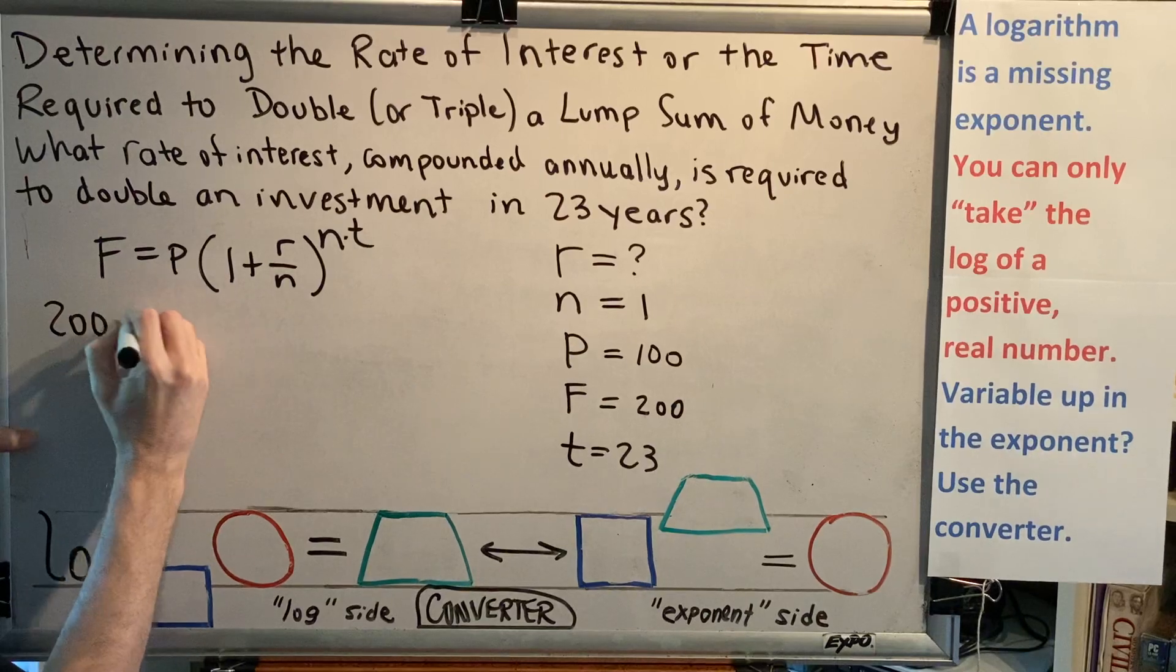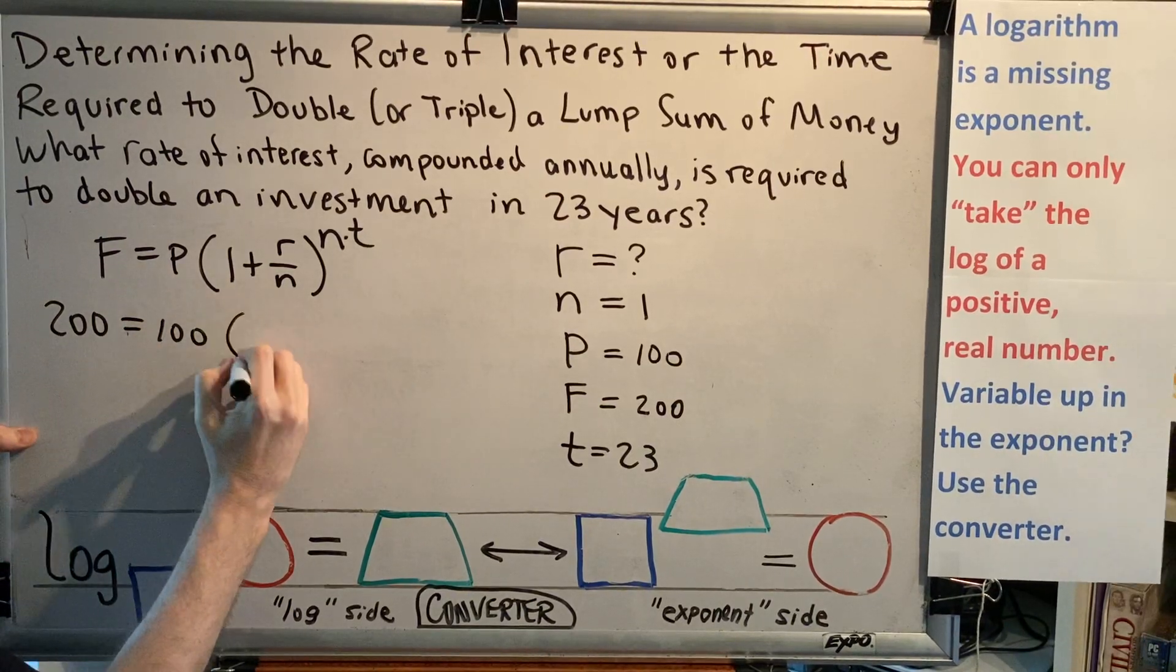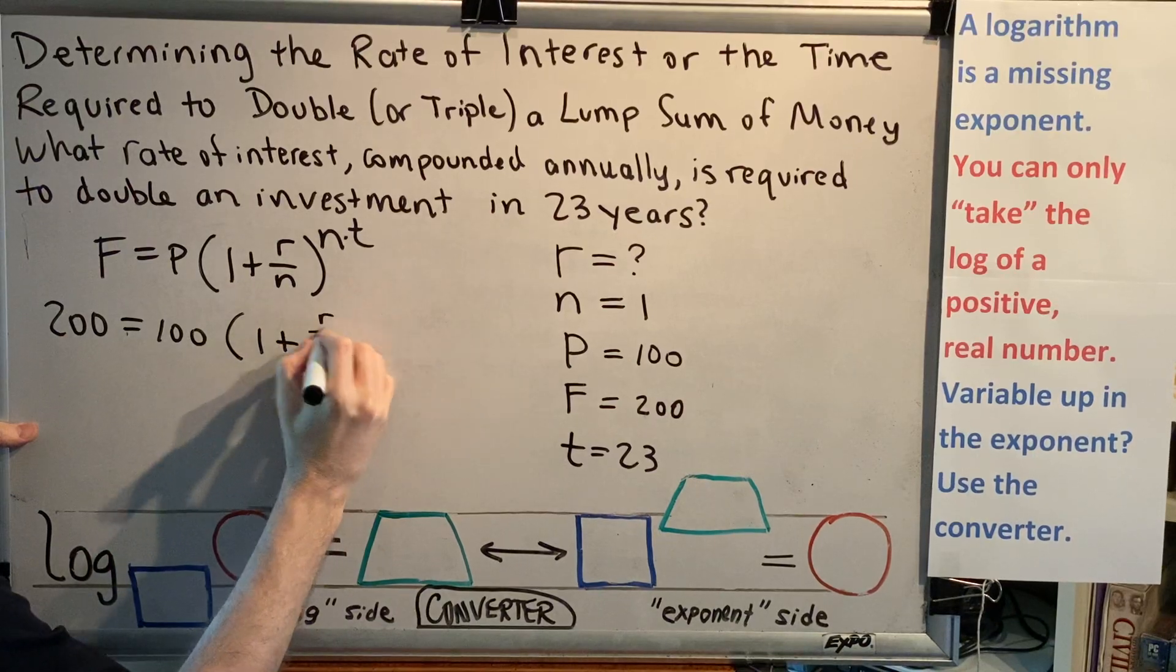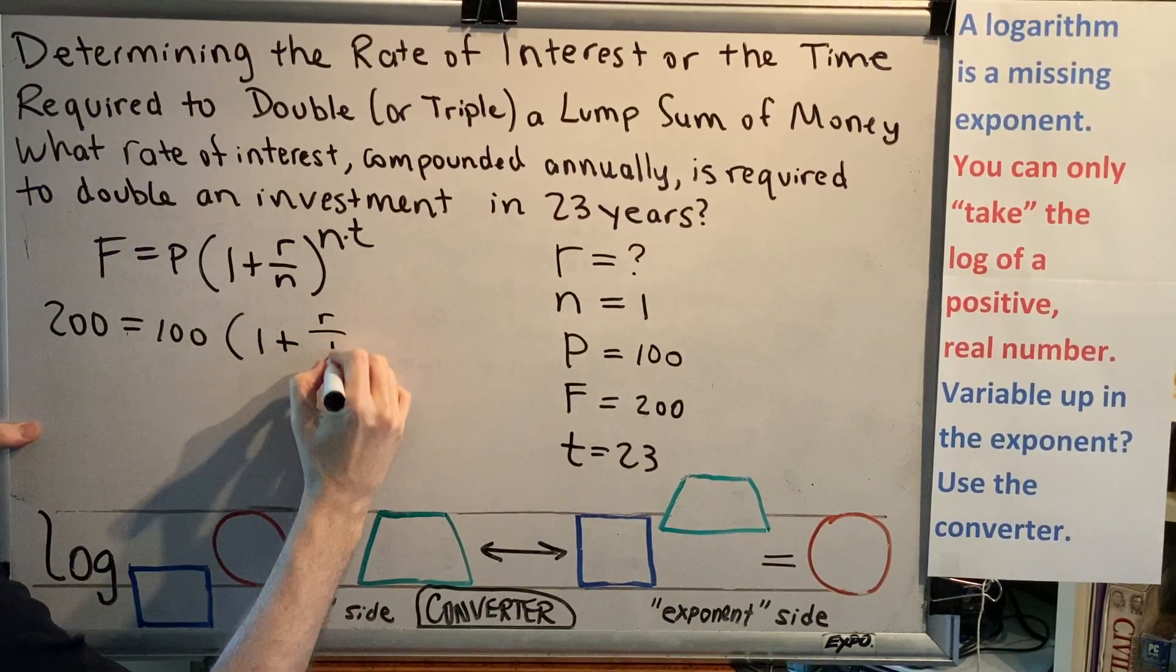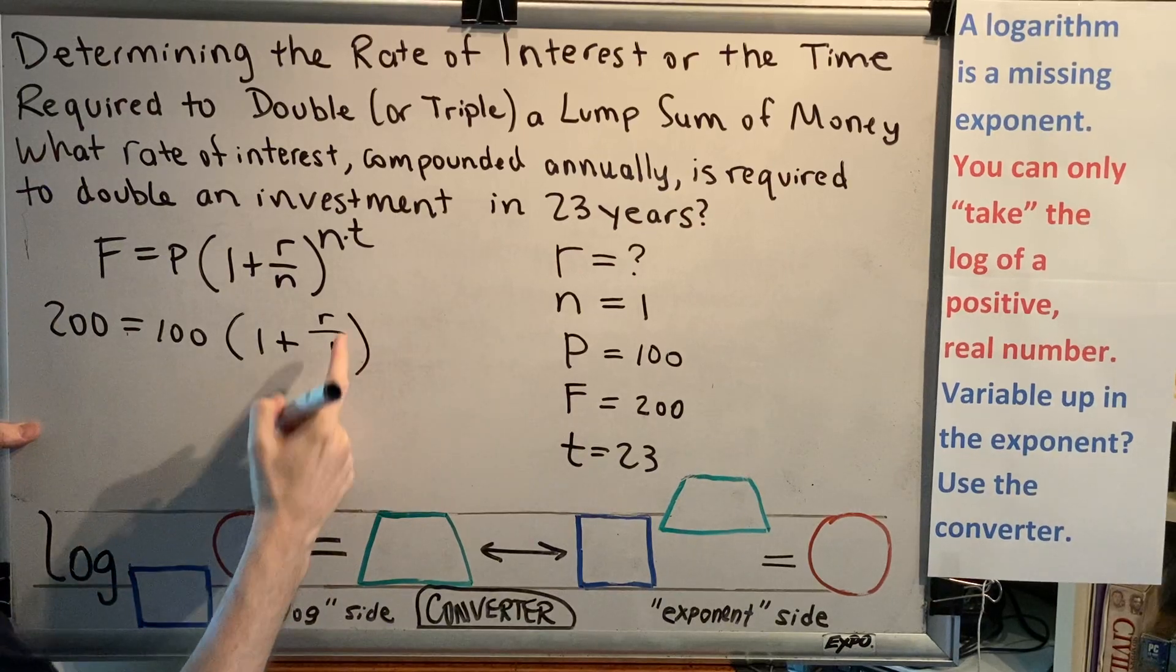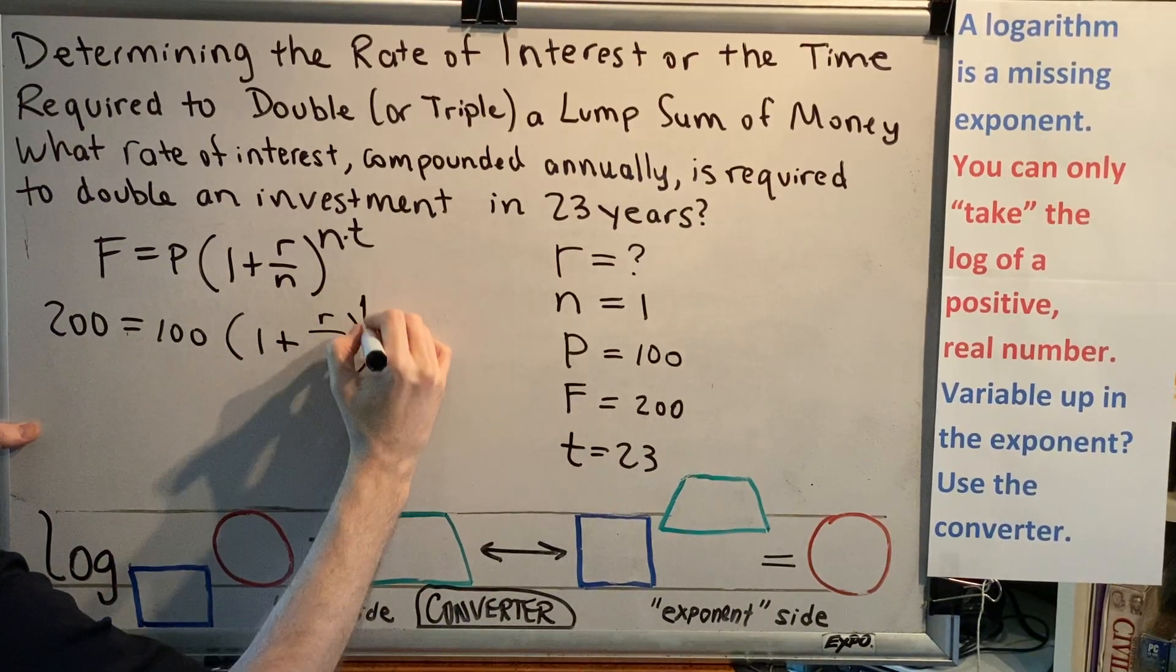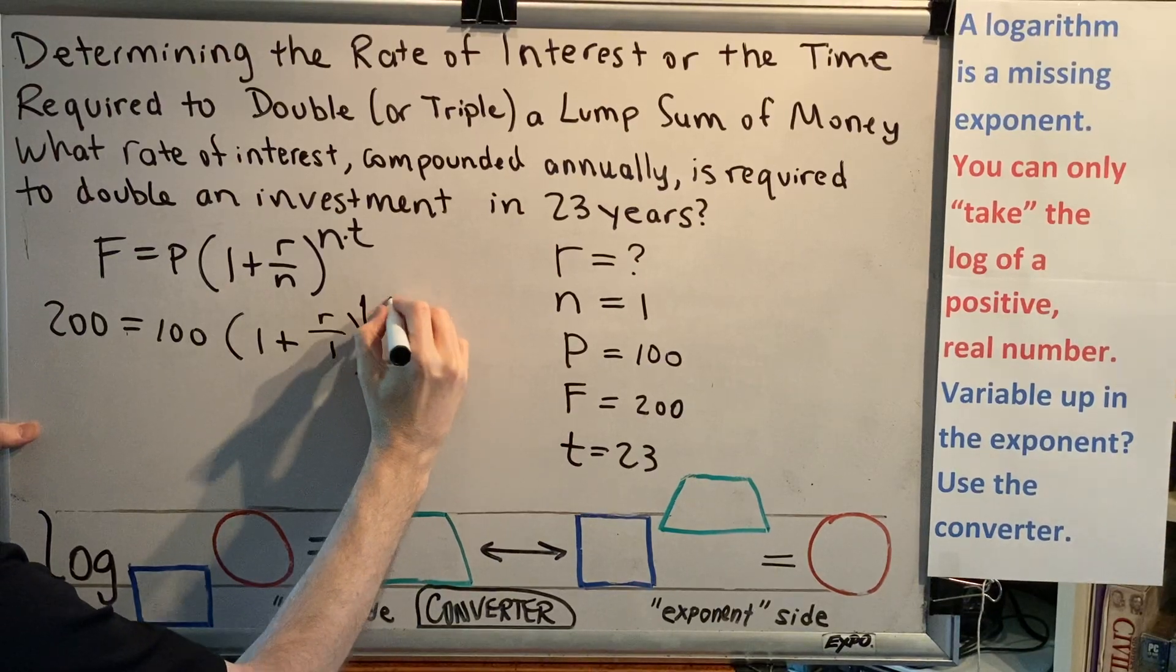So we get 200 equals 100 times the quantity 1 plus R, which we're going to leave as R because it's our unknown, over N which is 1, all raised to the NT power, N times T, 1 times 23.